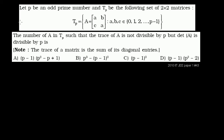We have the same setup here as in the previous problem, problem number 42, where P is an odd prime number. They define T sub B as the following set of 2 by 2 matrices, where each matrix has the form A's along the diagonals, then a B and a C. Each of those numbers are between 0 and P minus 1 inclusive — so they can be 0, 1, 2, all the way up to P minus 1.